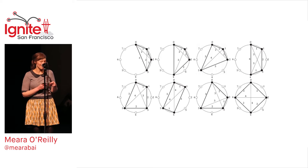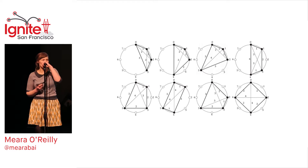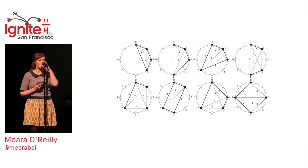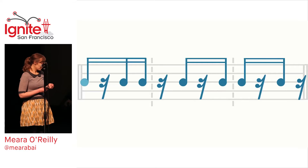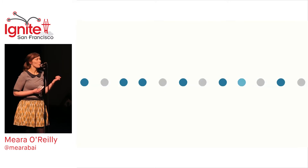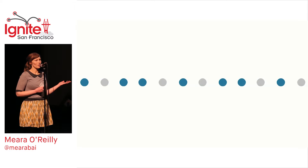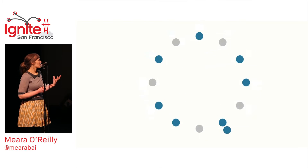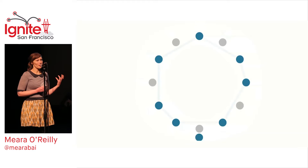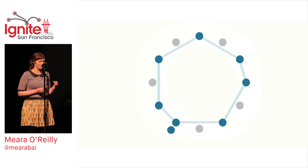These are called rhythm necklaces. They're used in fields as varied as radio astronomy, nuclear physics, and crystallography to represent a repeating pattern. They're also really interesting when they're applied to music. Let's think about how rhythm is most often represented in a horizontal line, and how circular representations of repeating patterns allow us to think about rhythm in a new geometric way.